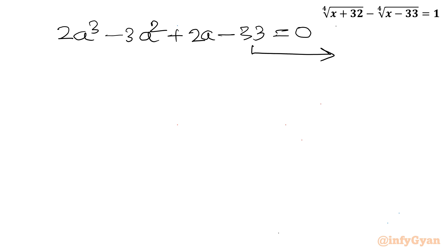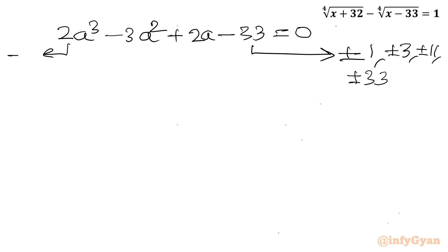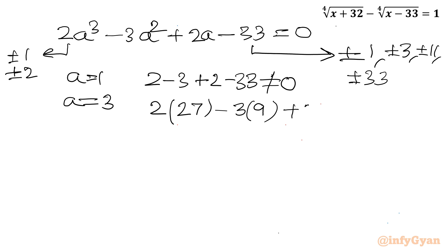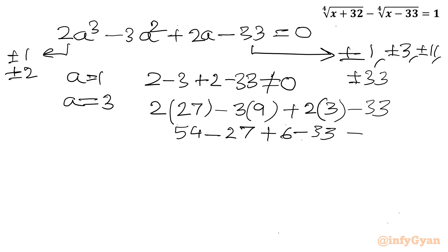To find rational roots, the eligible factors of the constant term 33 are ±1, ±3, ±11, ±33, and the leading coefficient factors are ±1, ±2. Testing a = 1: 2 - 3 + 2 - 33 ≠ 0. Testing a = 3: 2(27) - 3(9) + 2(3) - 33 = 54 - 27 + 6 - 33 = 60 - 60 = 0. Yes! So a = 3 is a root and our base solution.